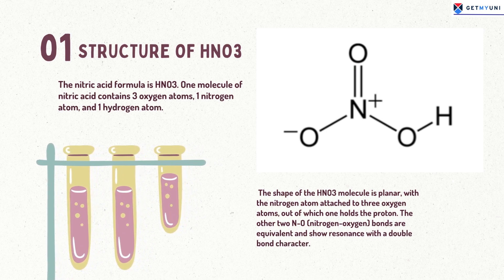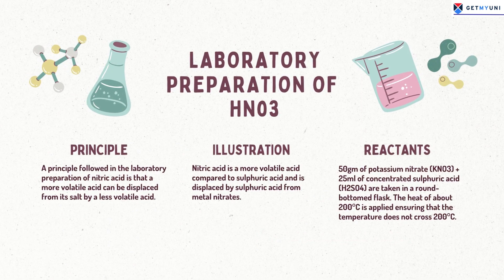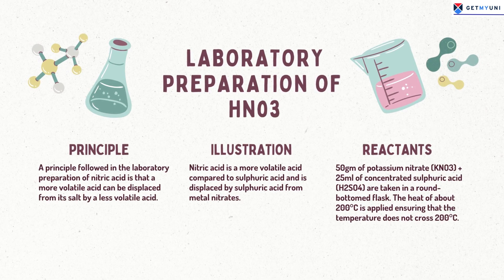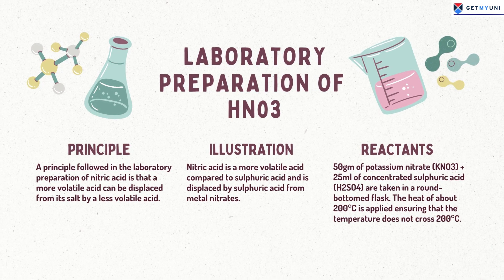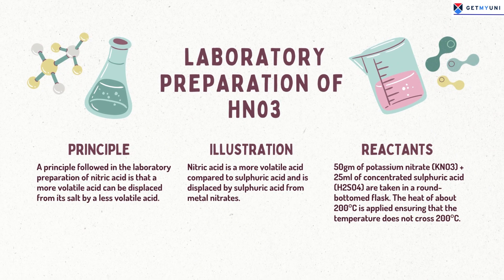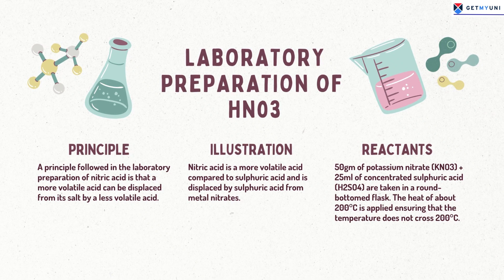Now let's discuss the laboratory preparation of nitric acid. Nitric acid is generally prepared in the laboratory by heating potassium nitrate or sodium nitrate with concentrated sulfuric acid. The heating process is done in a glass retort and the vapors of nitric acid are condensed in a receiver cooled by water. The principle followed is that a more volatile acid can be displaced from its salt by a less volatile acid. Nitric acid, being more volatile than sulfuric acid, is displaced by sulfuric acid from metal nitrates.